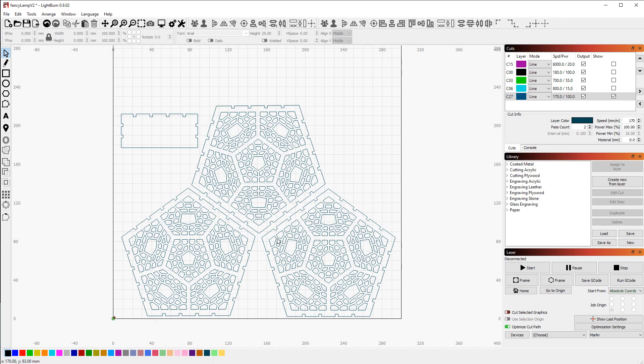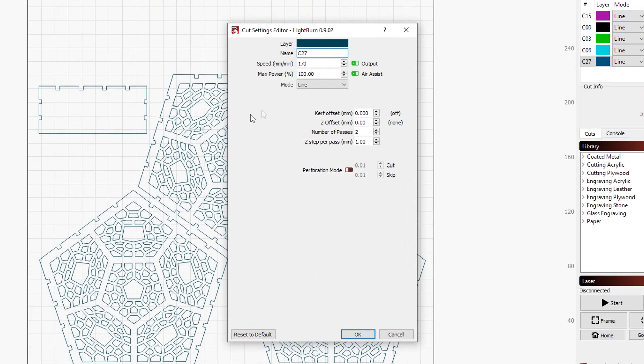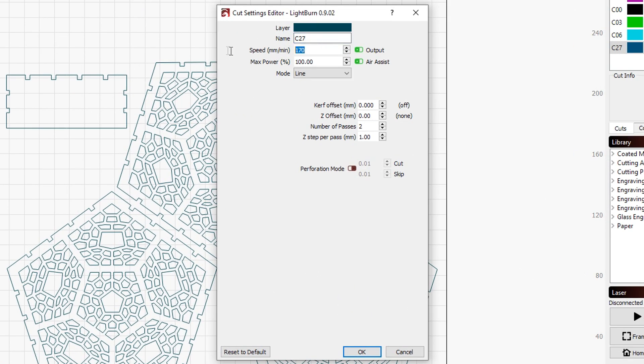Here's the most recent one where I have three of the main pieces and one of the base pieces that I didn't even use in the end. The important thing is the settings here. I'm using 170mm per minute, 100% power, and I'm going in two passes.